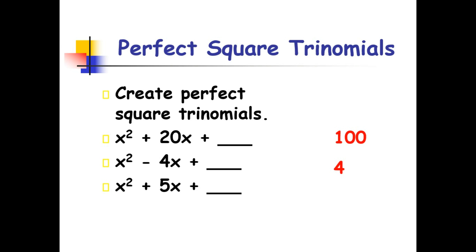x squared plus 5x plus blank. Now what is the half of 5? Since 5 is an odd number, let's just consider the fraction 5 over 2. And the square of 5 over 2 is 25 over 4.